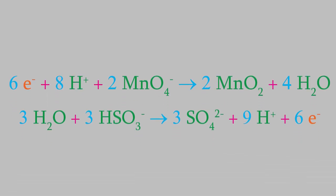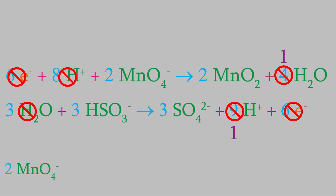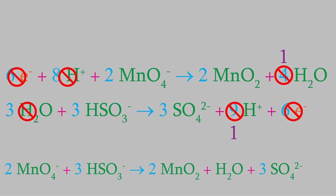Let's add the reactions now. The 6 electrons will cancel out. Notice that there are also 8 H plus ions on the left in the top reaction and 9 on the right in the bottom one — 8 of those will cancel out, leaving just 1 hydrogen on the right side. Also, there are 3 water molecules on the left and 4 on the right, so 3 of the water molecules will cancel out on each side. We end up with 2 permanganate ions and 3 bisulfite ions on the left, and 2 manganese oxide molecules, 1 water molecule, 3 sulfate ions, and a hydrogen ion on the right. The reaction is balanced now, and this is the process that you learned in the last video.